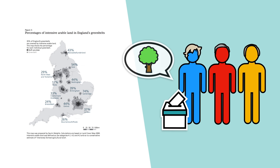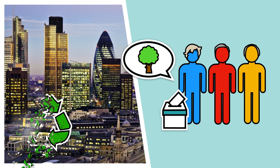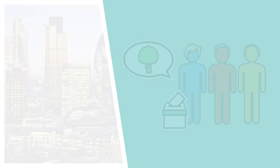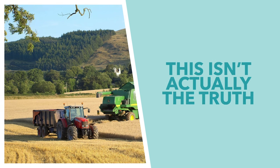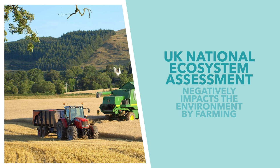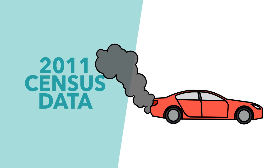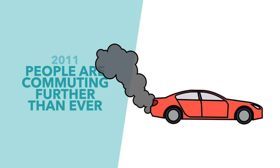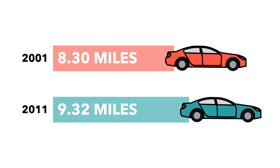Politicians and voters get very defensive about green belts because they imagine them as leafy, eco-friendly areas that prevent cities like London from becoming infinite sprawling metropolises. But this isn't really true. As well as restricting house building, green belts aren't particularly green — 35% of green belt land is used for intensive arable farming, which has a net negative effect on the environment according to the 2011 UK National Ecosystem Assessment. They also mean longer commutes; 2011 census data suggests the average commute distance increased from 8.3 miles in 2001 to 9.32 miles in 2011.